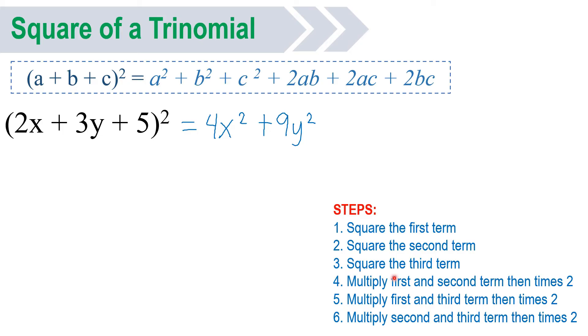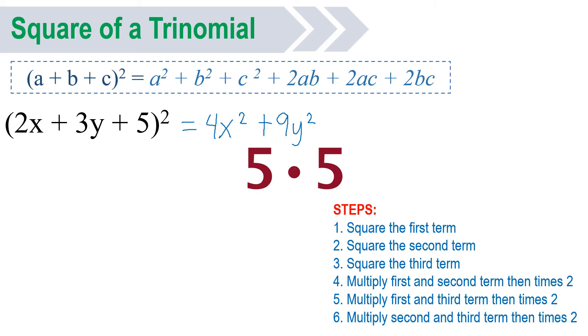Third step: square the third term. We have 5. 5 times 5, that will be 25.